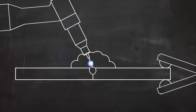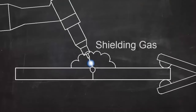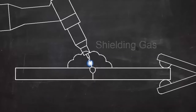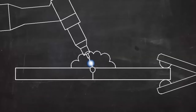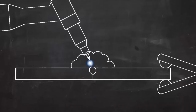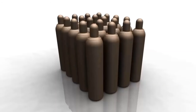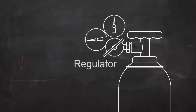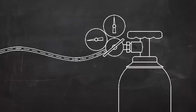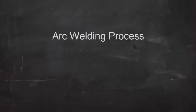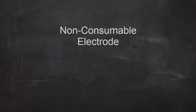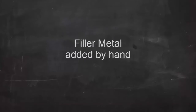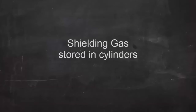In TIG welding, the molten metal is protected by a shielding gas — usually argon, and sometimes helium or other gases — which keeps the molten metal from reacting with oxygen and water vapor in the atmosphere. This shielding gas is stored in high pressure cylinders, and the pressure is reduced to a usable level by a regulator. The shielding gas flows through a hose and comes out right at the point of the weld. In summary, TIG welding is an electric arc welding process using a non-consumable tungsten electrode, with filler metal added separately via a filler rod and shielding gas supplied from a high pressure cylinder.